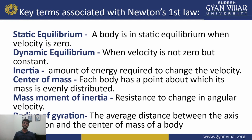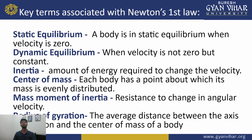There are some key terms associated with Newton's first law of motion. First is equilibrium. Equilibrium is a condition where the net resultant of all the forces acting on a body is zero. This equilibrium can be of static type or dynamic type. In static equilibrium the velocity of the object is zero. In dynamic equilibrium the velocity is not zero but constant — the object maintains that constant velocity because no net force is acting on it.